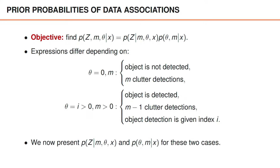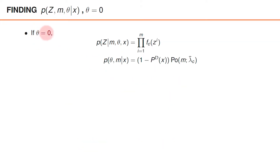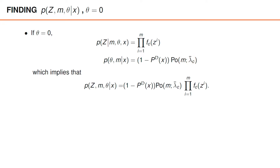We will now present the expressions for these distributions in these two different cases. Let us start with the case where the object is undetected and all measurements are clutter detections. In this case, the vectors in z are all clutter measurements, and the distribution over z is just the product over fc of zi, since the clutter measurements are independent and all have the spatial distribution fc. The prior probability of theta and m given x is simply 1 minus pd, representing the probability that theta is equal to zero, times the probability of getting m clutter detections, which is the Poisson distribution with parameter lambda bar c evaluated at m. Taking the product of these two factors gives us an expression for the joint distribution of z, m and theta given x.